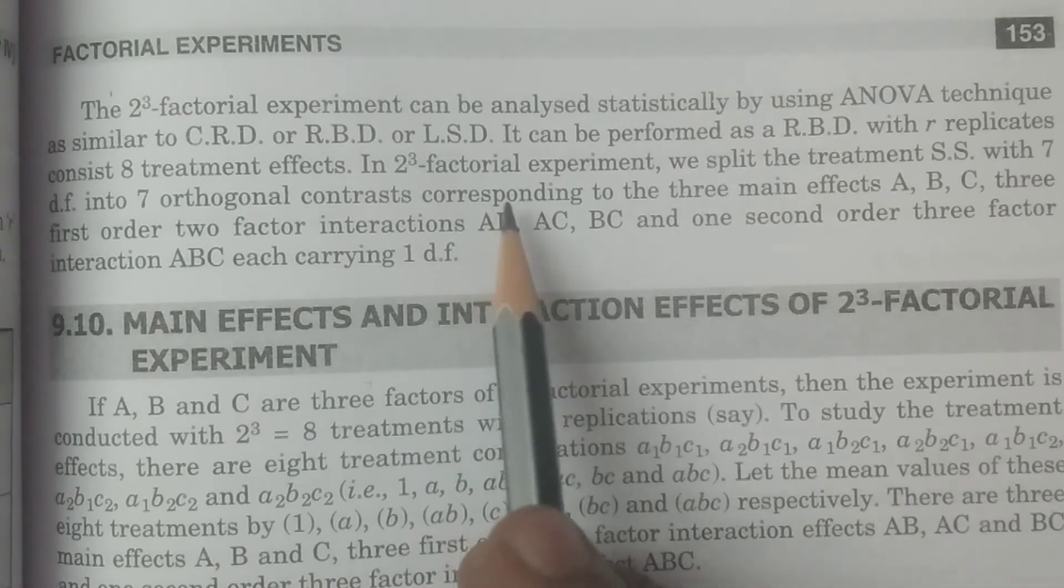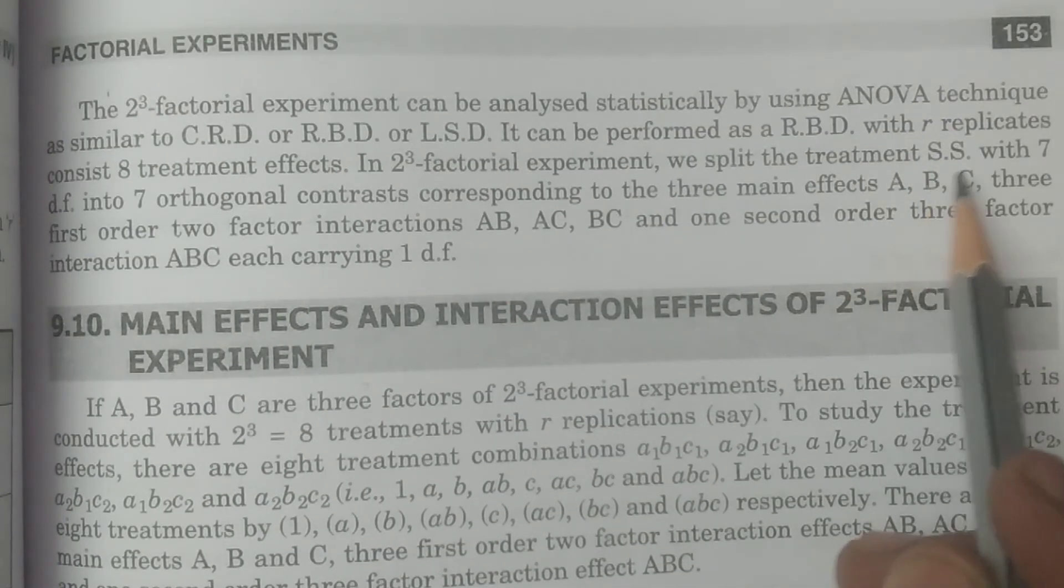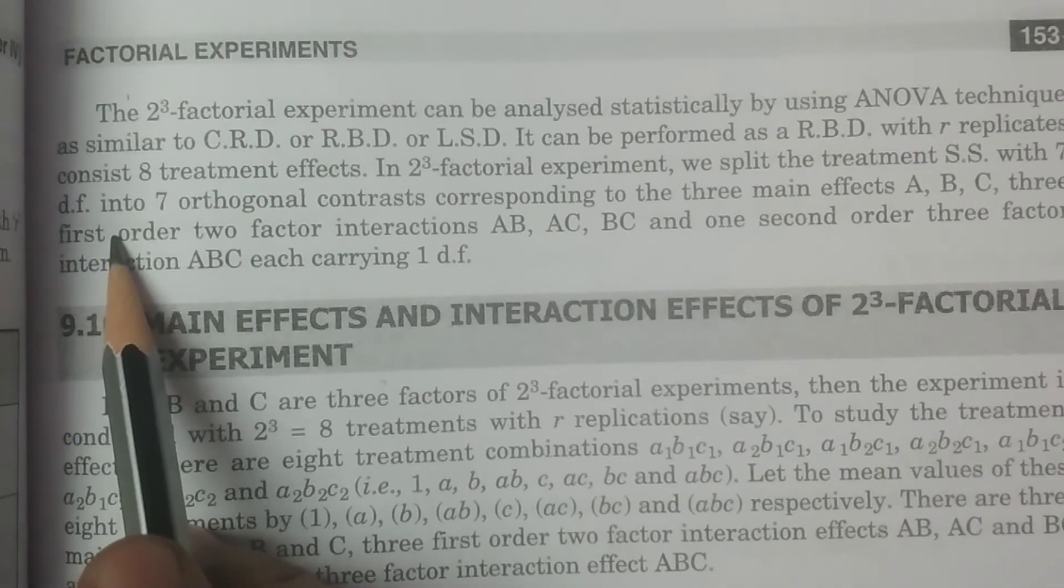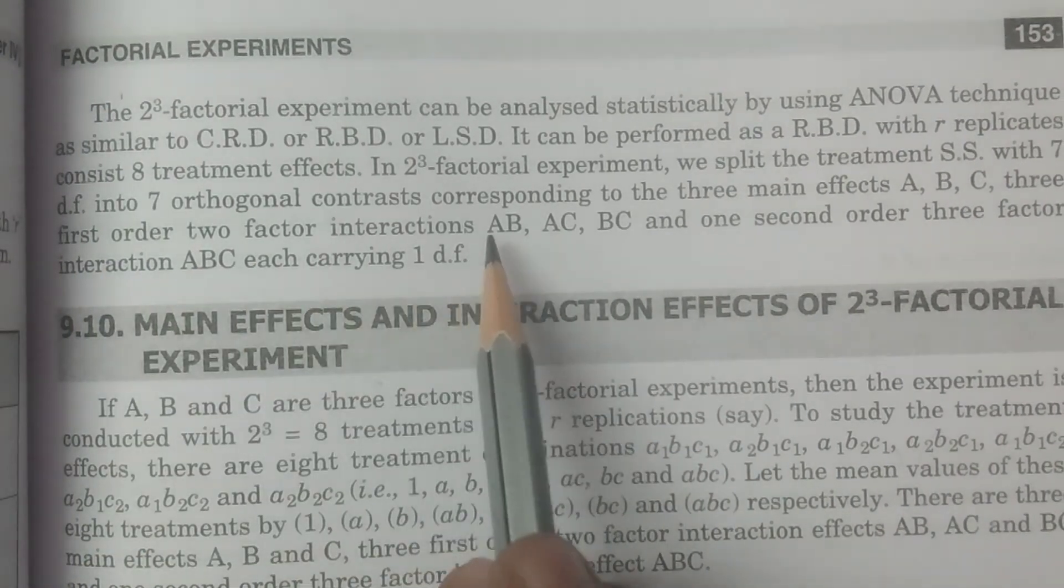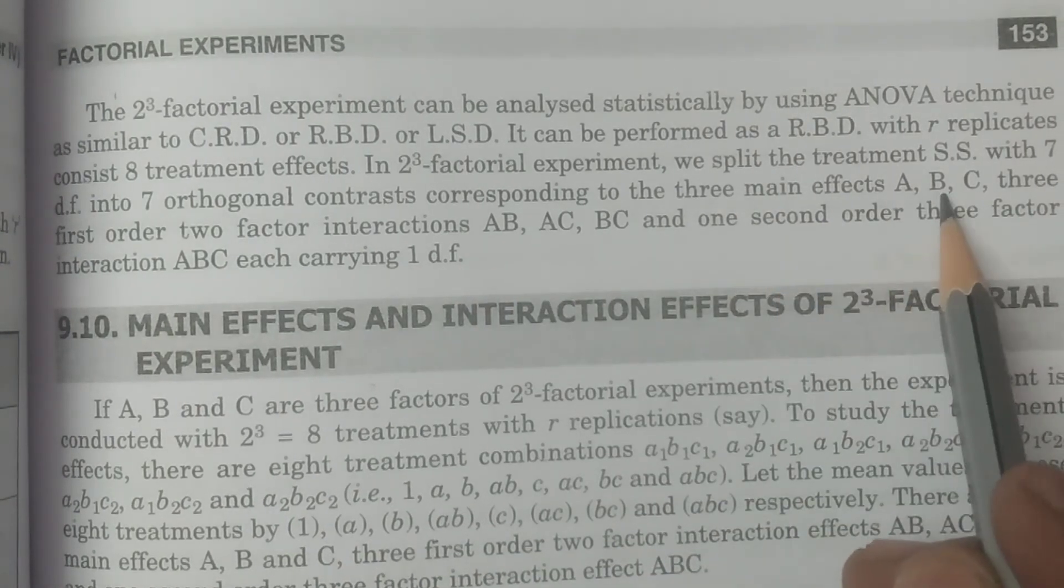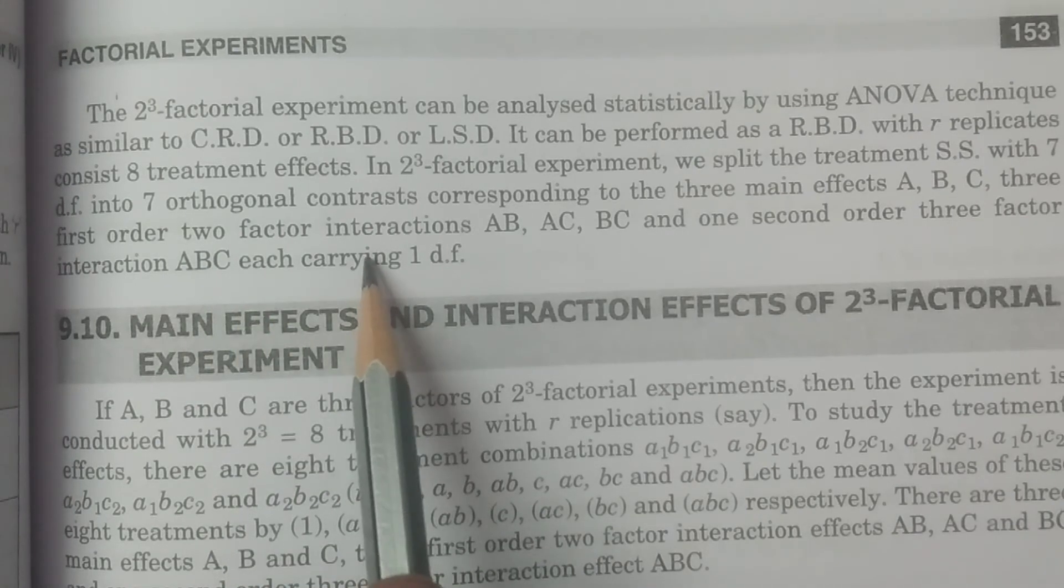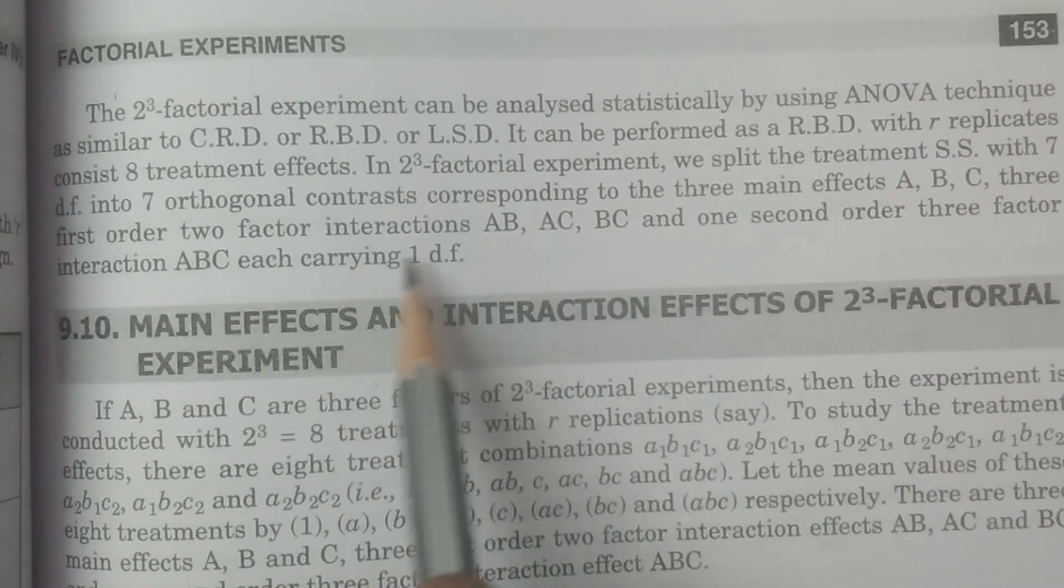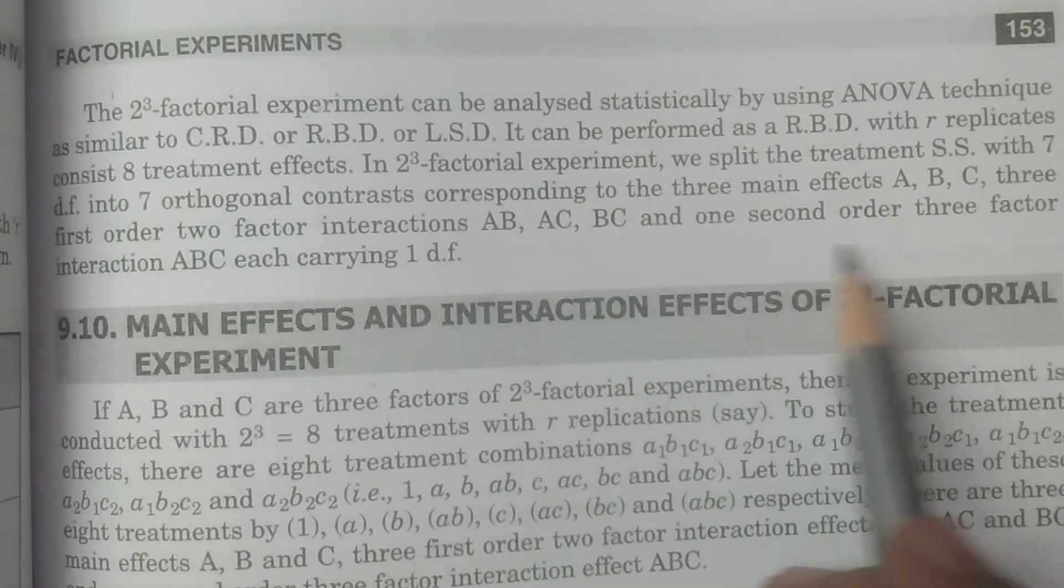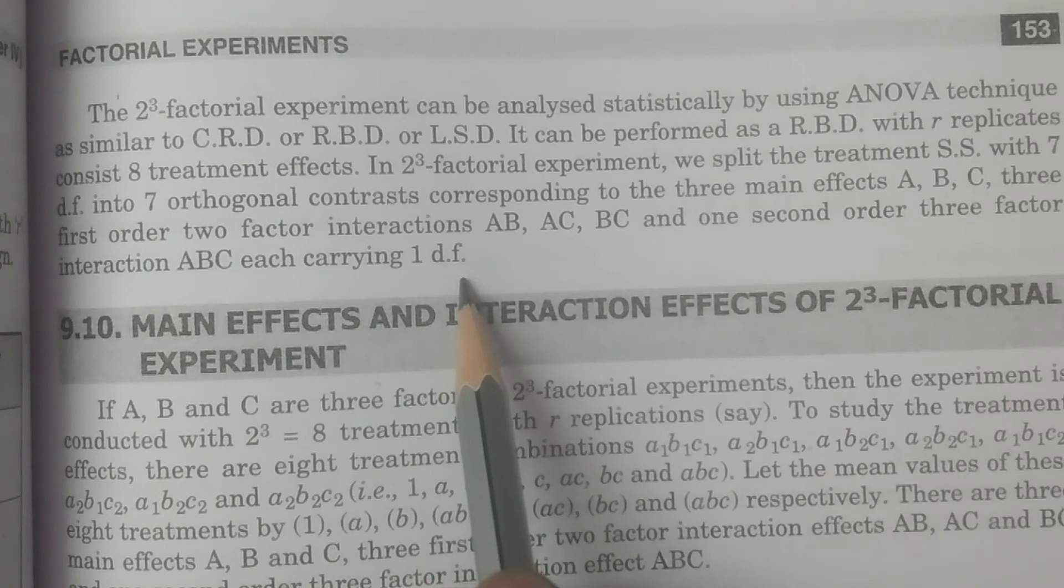And the treatment sum of squares is going to be split with seven degrees of freedom into seven orthogonal contrasts corresponding to the three main effects A, B, C, three first order two factor interactions AB, AC, BC, and one second order three factor interaction ABC, each carrying one degree of freedom.